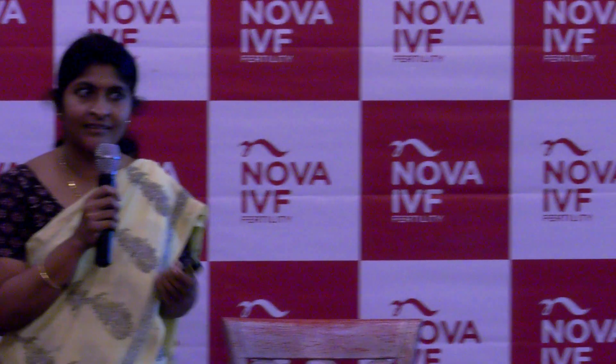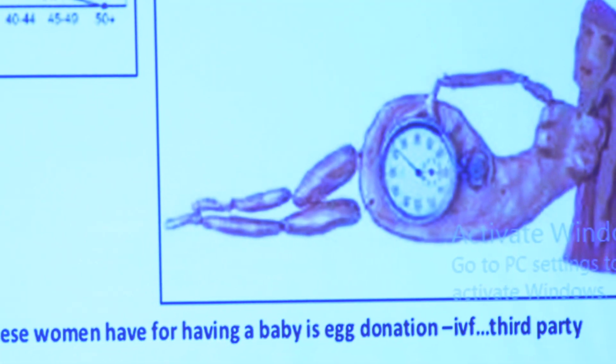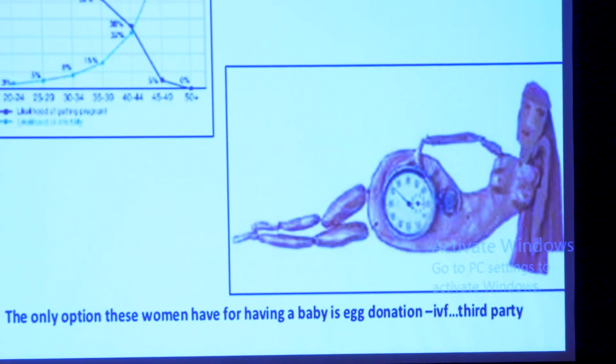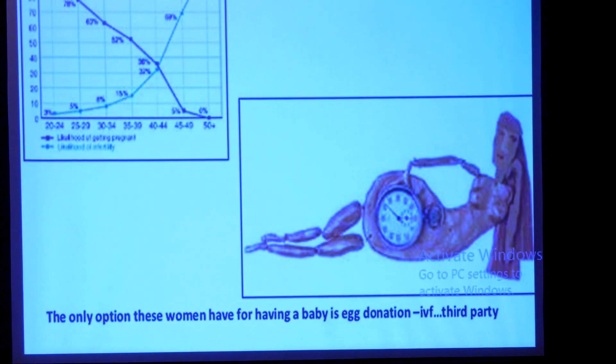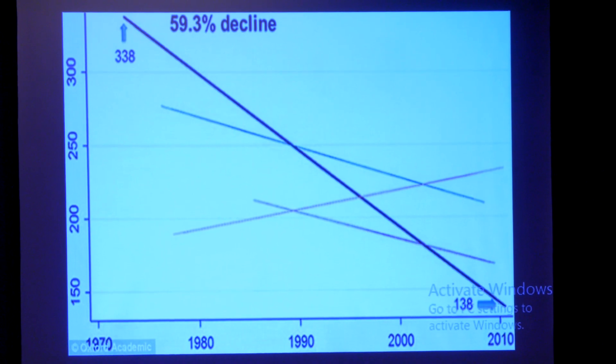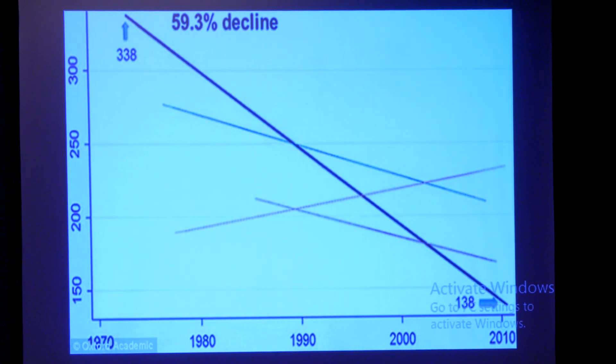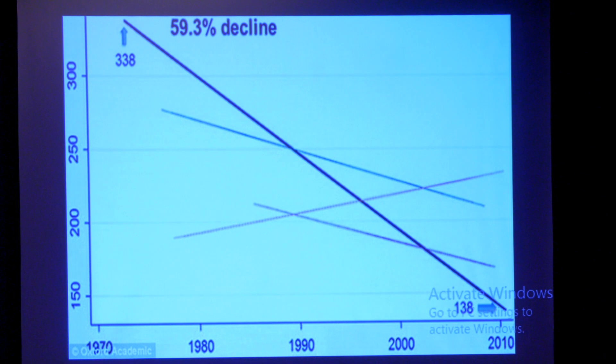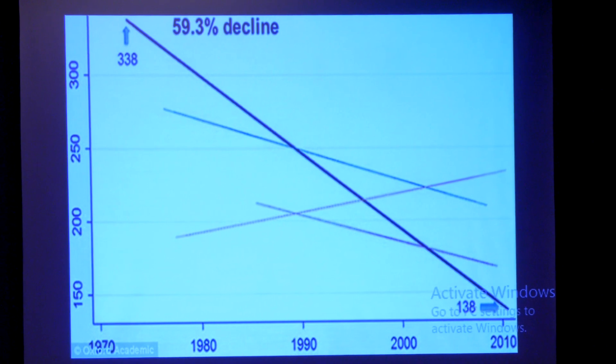How would we be able to avoid third-party reproduction? Third-party reproduction is where the couple depends on another woman for her eggs, another man for donor sperm, or a donor embryo altogether. Even with the male factor, there is a decrease in the quantity as well as the quality of sperm — the count at a given age, the quality at a given age, the motility, because only actively moving sperms are capable of converting eggs into embryos, and the morphology. All these factors also show a decreasing trend.